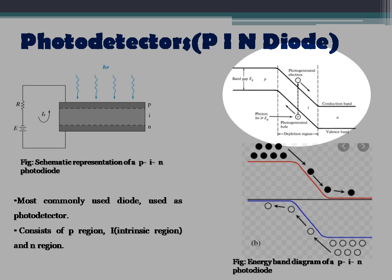An electric field is established in the depletion region — that is, the intrinsic region — in the negative x direction. If light is incident on the P side, electron-hole pairs are generated. The electrons from the P region diffuse into the I region and, due to the electric field, are drifted toward the N region. When electron-hole pairs are generated in the I region, the holes are sent to the P side and the electrons to the N side, again due to the electric field in the negative direction.